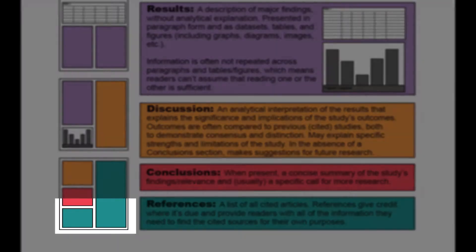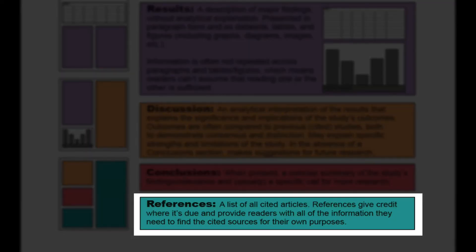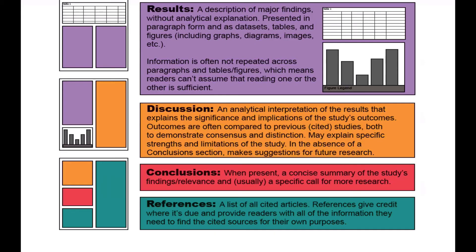Last comes the references, a numbered or alphabetized list of all literature cited in the article. This section is not only professionally and ethically necessary for giving credit where it's due, it's also an incredibly helpful resource for writers and researchers who need to consult a wide array of literature before forming their own arguments or beginning their own research.